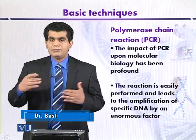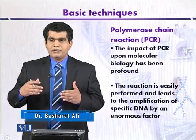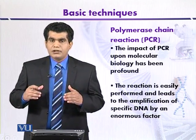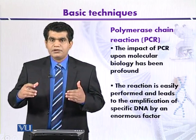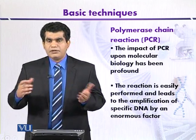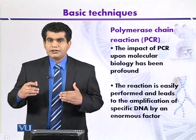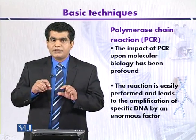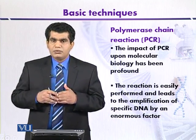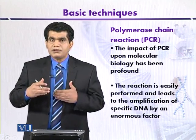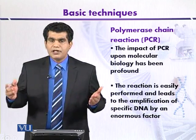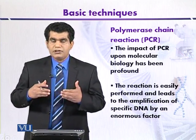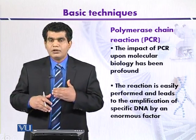Then the DNA is subjected to a denaturation step where the double-stranded DNA is converted into single-strand. After denaturation, the hybridization step is there, where primers will anneal at five or three prime ends. Then the temperature is further lowered so that the next step, extension, takes place. By subjecting DNA to repeated cycles of denaturation, hybridization, and extension, we can produce millions of copies of target DNA within a short period of time, like within two to three hours.